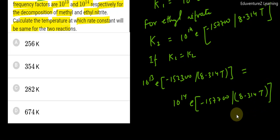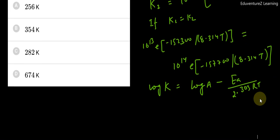When they are equal, there's a formula you've read before in Arrhenius theory: log K equals to log A minus Ea by 2.303 RT. If you extend this formula further...